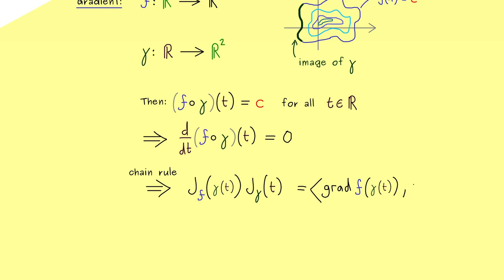Moreover the second Jacobian matrix can also be written shortly as gamma prime of t. And now we know from above this is simply 0 for all points t. However now this means both vectors here in the inner product are orthogonal to each other.